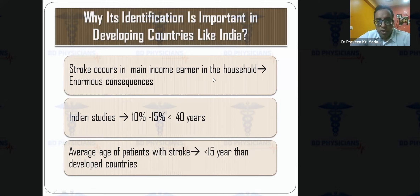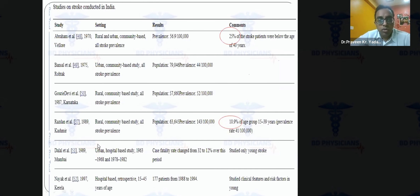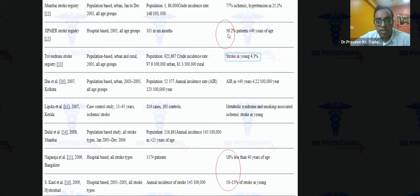Young stroke has enormous economic consequences in developing countries like India. The average age of stroke in developing countries is about 15 years less than in developed countries, making young stroke proportionally much more common here. Indian epidemiological studies from Vellore, Kashmir, Mumbai, Kerala, and Jipmer show that young stroke prevalence ranges from approximately 10% to 36%, with an average of 15 to 20% of all strokes occurring in the young.